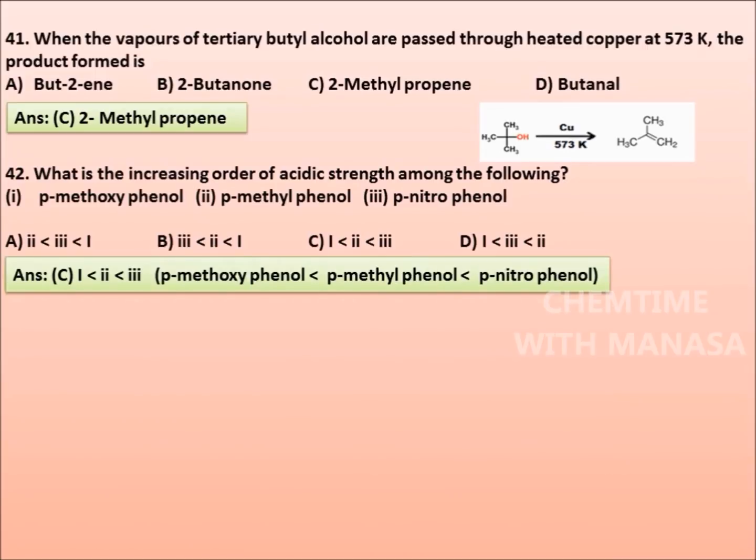And the correct answer is option C: 1 less than 2 less than 3, or p-methoxyphenol is less acidic than p-methylphenol which is less acidic than p-nitrophenol.